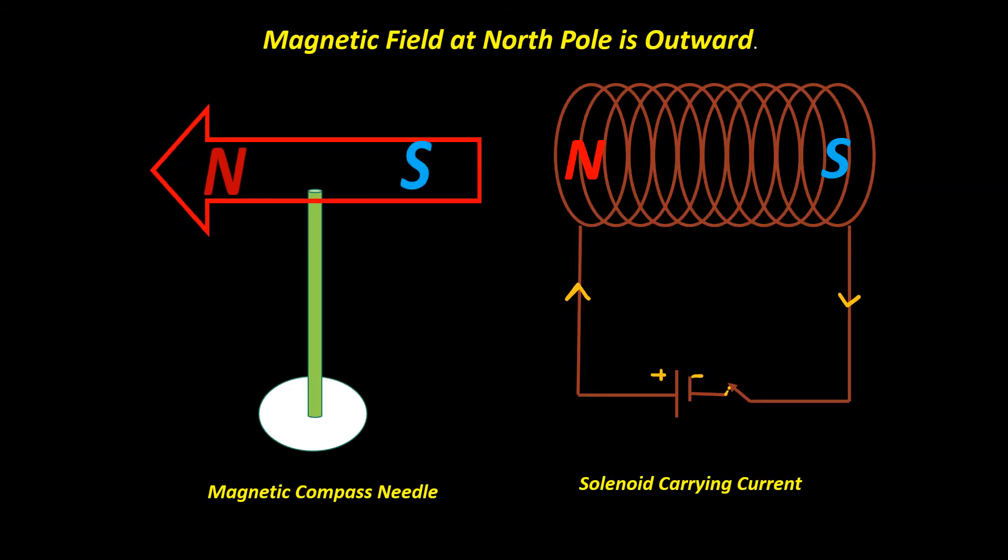If the arrowhead of compass points outward, the corresponding pole of solenoid is north pole, since magnetic field is outward at north pole of a bar magnet.